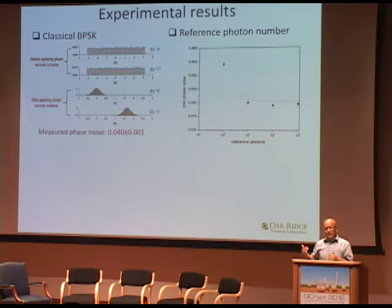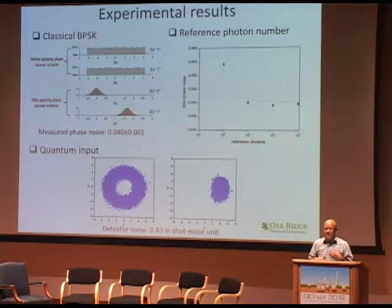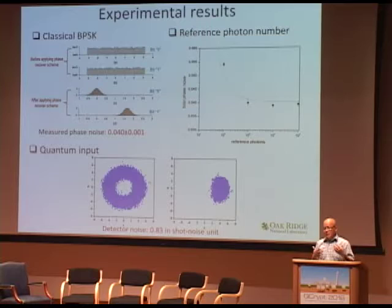This experiment also shows how many photons we need in the reference pulse. When the photon number in the reference pulse is about 1,000, the noise is basically limited only by the laser phase noise. With quantum input, the raw data shows a phase-randomized coherent state, and after applying the phase recovery scheme, we can recover the input coherent state.